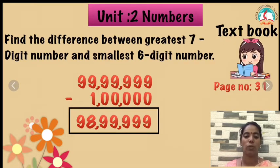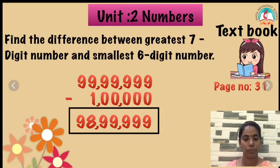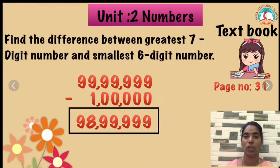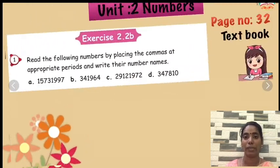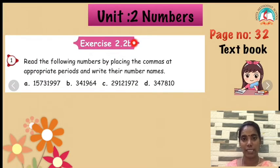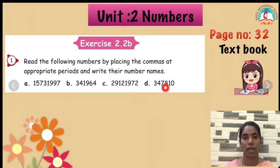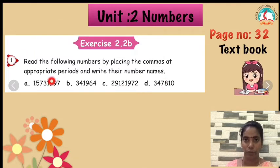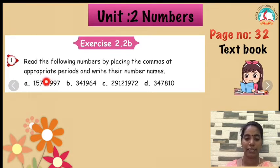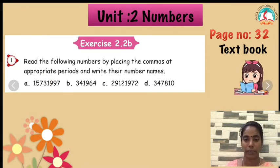The next one: we are going to see exercise 2.2B — read the following numbers by placing commas. Children, you already know how to place the commas, right? 1s, 10s, 100s — after that you have to put a comma. 1000s and 10,000 — after that you have to put a comma. And then you have to remember that. So place the comma in appropriate places.